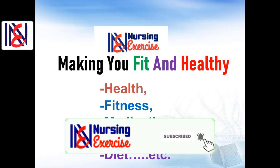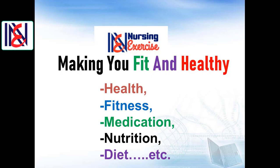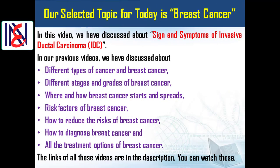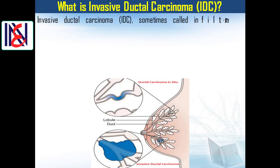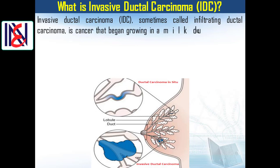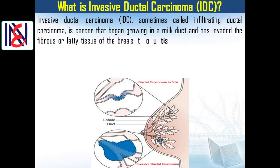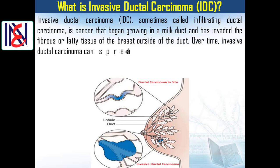Let's start our presentation. What is invasive ductal carcinoma (IDC)? Invasive ductal carcinoma, sometimes called infiltrating ductal carcinoma, is cancer that began growing in a milk duct and has invaded the fibrous or fatty tissue of the breast outside of the duct. Over time, invasive ductal carcinoma can spread to the lymph nodes and possibly to other areas of the body.